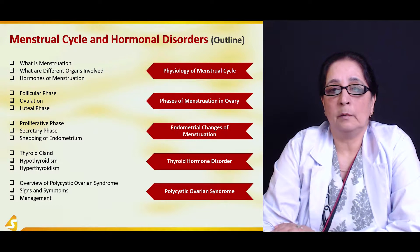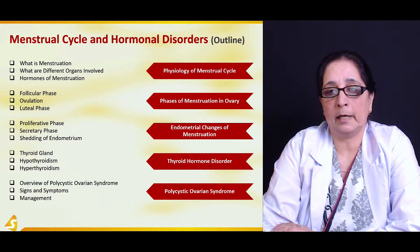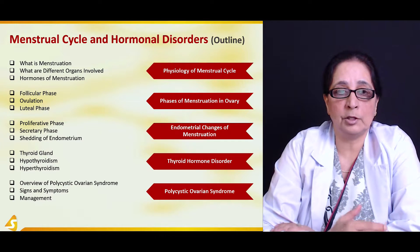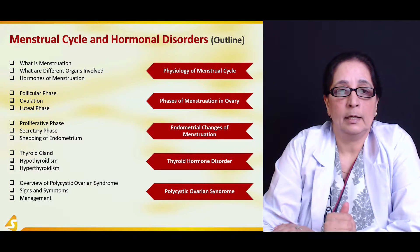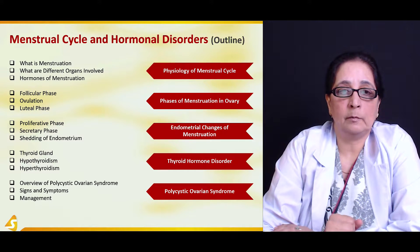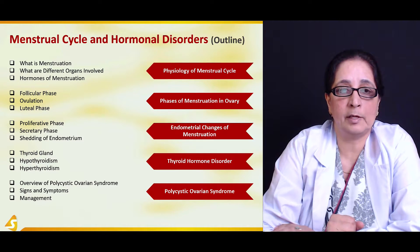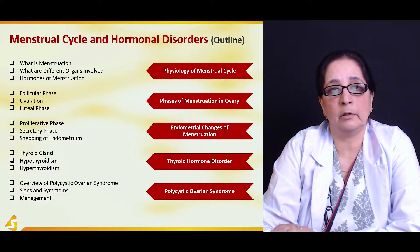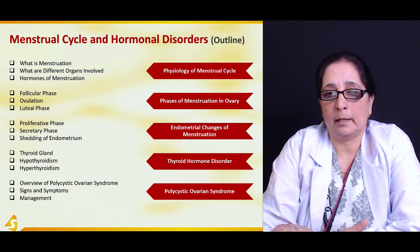Then we will talk about, in the third section, endometrial changes of the menstrual cycle. This endometrium is in the uterus, and these changes are taking place in the uterus. We will cover three main phases occurring in the endometrium: the proliferative phase, the secretory phase, and the shedding of the endometrium when the actual blood flow is occurring.